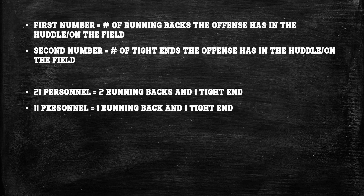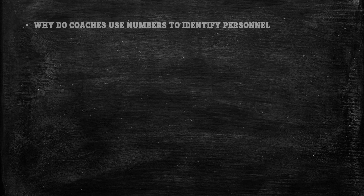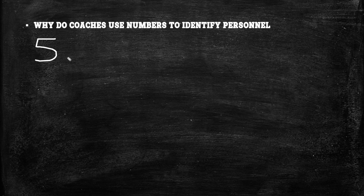Why do coaches use the numbering system to identify personnel? In American football, at most on a play there are going to be five eligible players. That means you're removing the quarterback and the five ineligible linemen. Notice I'm saying five eligible players — not necessarily always wide receivers, running backs, or tight ends, because we do have tackle-eligible plays. Using the numbering system for running backs and tight ends allows you to quickly know how many wide receivers the offense is putting on the field.